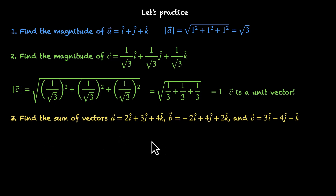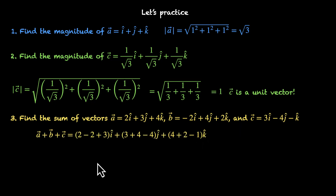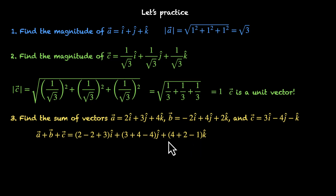Find the sum of vectors A, B, and C, where A = 2i + 3j + 4k, B = −2i + 4j + 2k, and C = 3i − 4j − k. To add vectors, add their corresponding components separately. A + B + C = (2 − 2 + 3) i-cap + (3 + 4 − 4) j-cap + (4 + 2 − 1) k-cap = 3 i-cap + 3 j-cap + 5 k-cap.